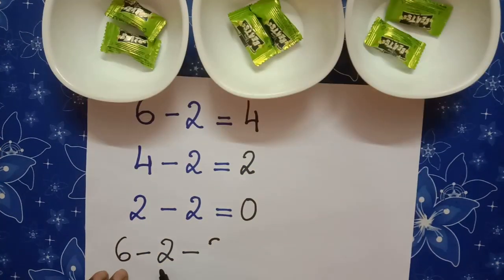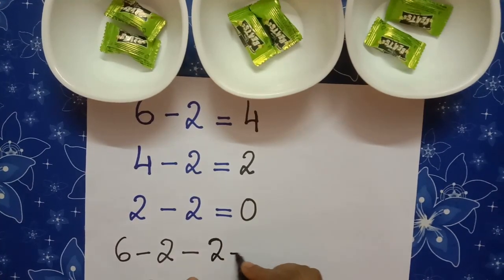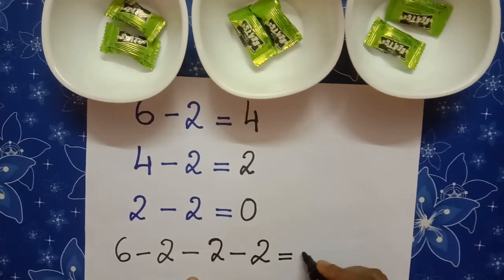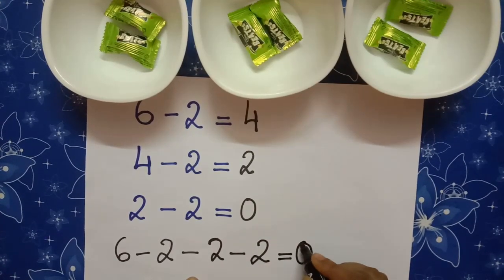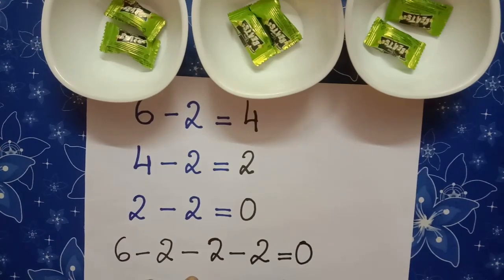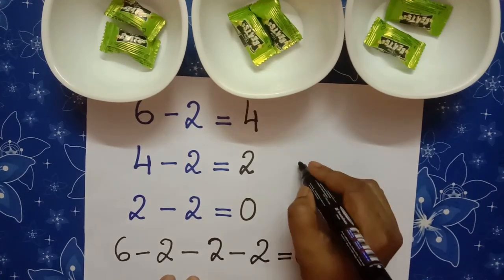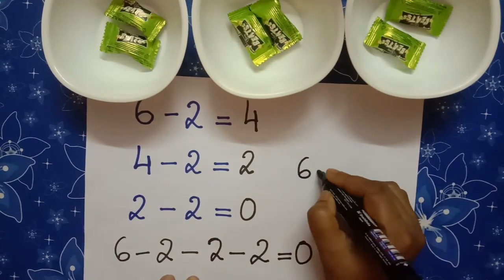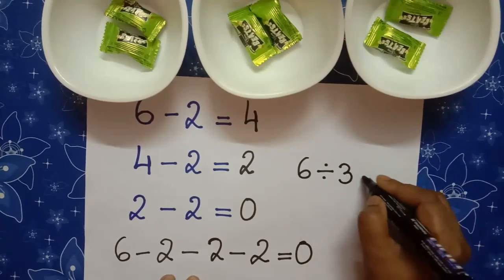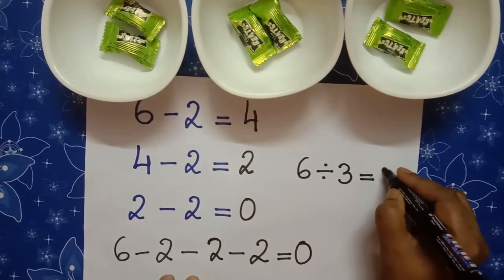So, 6 minus 2 minus 2 minus 2. How much we are getting? We are getting 0. So, 6 divided by 3 is equal to 2. We write it as 6 divided by 3 is equal to 2.